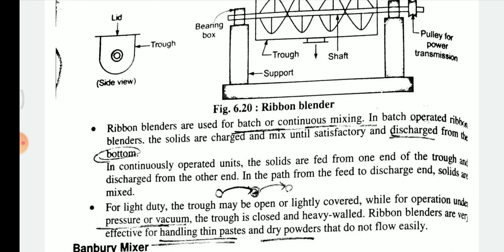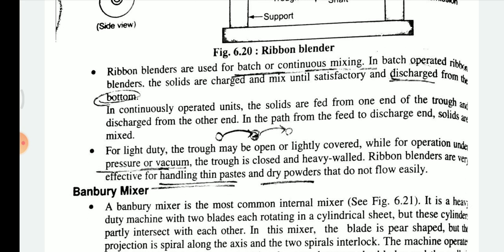Ribbon blenders are used for batch as well as continuous operation. In batch-operated ribbon blenders, solids are charged into the mixer and discharged from the bottom. In continuously operated units, the solid is fed from one end and discharged from the other end. For light duty, the trough may be open or lightly covered, while for operation under pressure or vacuum, the trough is closed and heavy-walled.